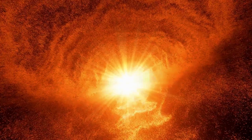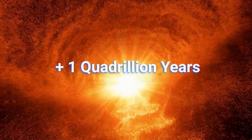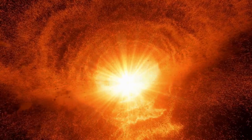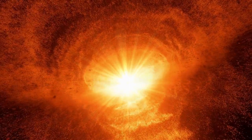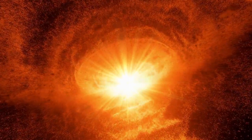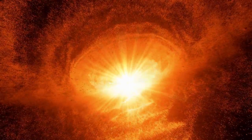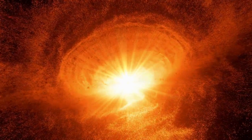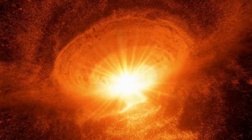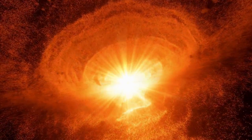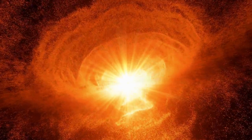In about 1 quadrillion years — that is, 1 followed by 15 zeros — the last remaining stars will exhaust their fuel and die out. The universe will be populated mainly by white dwarfs, neutron stars, and black holes.